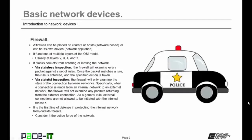Speaking about firewalls, a firewall can be placed on routers or hosts, meaning it would be software-based, or a firewall can be its own device — usually a network appliance. Firewalls function at multiple layers of the OSI model; usually you will find them operating at layers 2, 3, 4, and 7. Firewalls block packets from entering or leaving the network, and it can do this through one of two methods.